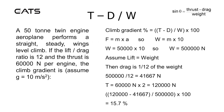Using the formula sine climb angle equals thrust minus drag over weight, here's a question. A 50 tonne twin engine aeroplane performs a straight steady wings-level climb. If the lift-to-drag ratio is 12 and the thrust is 60,000 newtons per engine, what is the climb gradient? Assume g equals 10 metres per second squared.